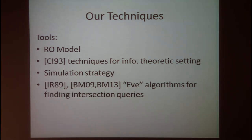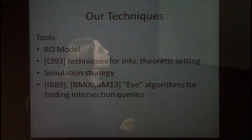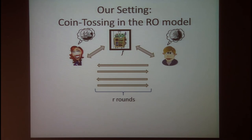Let's look at the techniques used to prove our result. The setting of our lower bound is the random oracle model: Alice and Bob run an r-round coin tossing protocol with access to a random oracle f, which models an idealized one-way function.